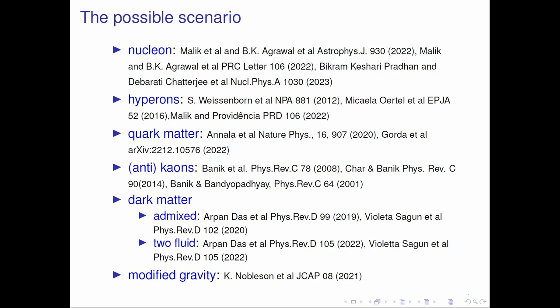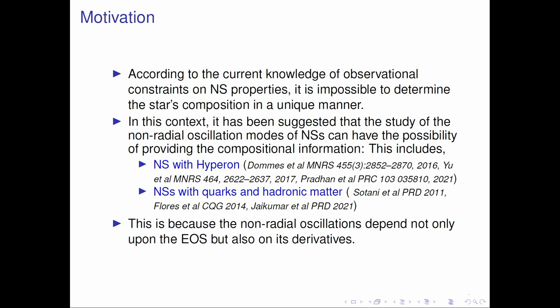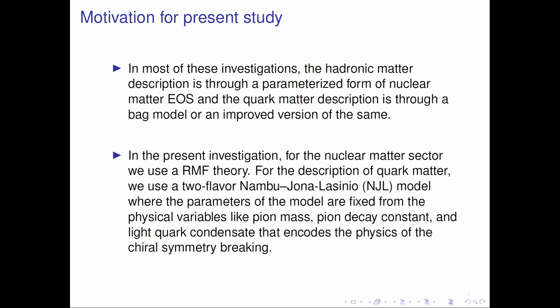Plenty of studies suggest that non-radial oscillation of neutron stars could be a very good probe to tell if quark matter is present or not. These F-modes and G-modes are found to be very hopeful. But our present motivation is to do a similar study with more realistic models. Previous studies used meta-models for nuclear matter equation of state and simplistic MIT bag models for quark matter. Here we have taken relativistic mean field models for the nuclear sector and the Nambu-Jona-Lasino model for the quark sector.